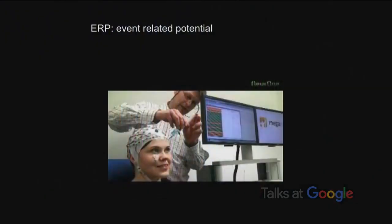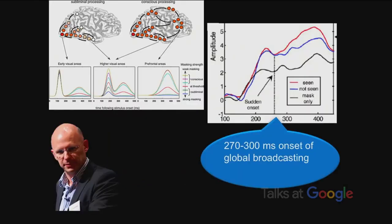This uses something called event-related potential, which is a form of EEG. My opponent Stanislas Dehaene looks at the difference between seen things and unseen things — consciously seen versus not consciously seen — and you only start to get a separation at about 270 to 300 milliseconds. So you can use temporal differences to get at whether it's a conscious perception on the global workspace point of view.